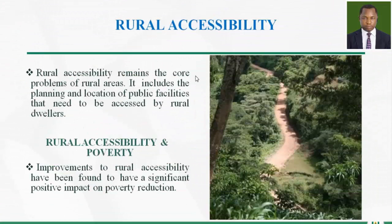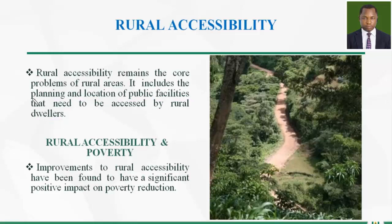Let's look into rural accessibility itself. Rural accessibility, as we discussed in our previous lesson, remains the core problem of rural areas. It includes the planning and location of public facilities that need to be accessed by rural dwellers — public facilities such as hospitals, schools, marketplaces, etc. Rural accessibility has to do with how rural dwellers are able to access those facilities through roads.